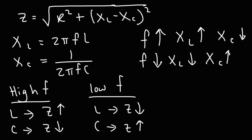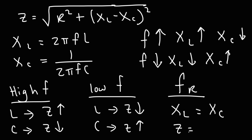There is a middle ground, and this middle ground is known as the resonant frequency. At the resonant frequency, the inductive reactance is equal to the capacitive reactance, and thus the only impedance provided by the circuit is the resistance of the circuit.